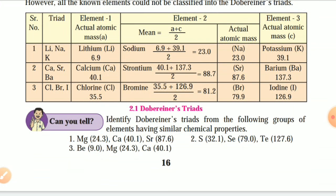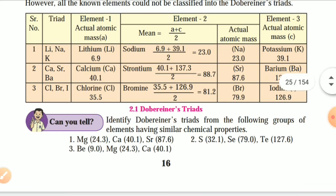Can you identify Döbereiner triads from the following group of elements having similar chemical properties? We have magnesium (24.3), calcium (40.1), and strontium (87.6), with atomic masses given in brackets.